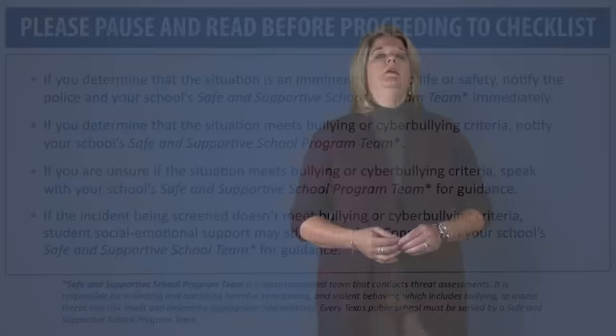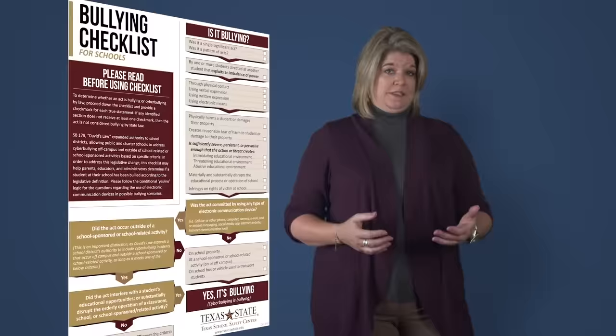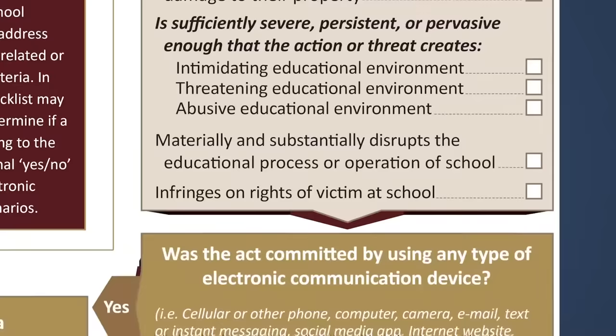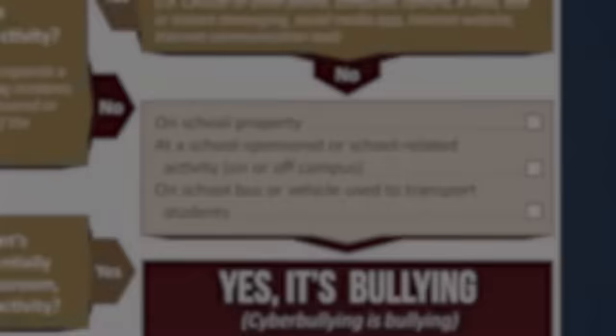Let's use the following checklist, available on the Texas School Safety Center website, to determine if an action or actions meet the definition of bullying under Texas Education Code 37.0832. If a section in the checklist receives at least one check mark, continue down the checklist, carefully considering each area in your investigation. If a section does not receive at least one check, then the action is not technically considered bullying according to current Texas law.